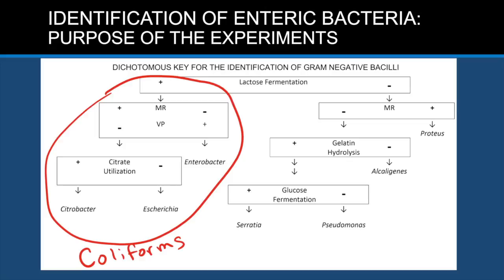The media is also differential and will show a visible difference for bacteria that produce specific enzymes. MacConkey agar contains lactose sugar and neutral red reagent. Bacteria that can ferment lactose are called coliforms, and they will produce acid that will turn the neutral red in the colonies a pinkish red. Detection of coliforms is important because they survive longer outside of the intestines and can indicate fecal contamination of water or food.